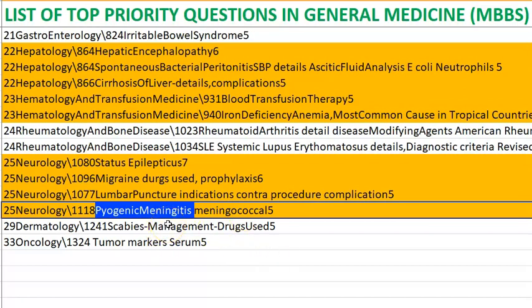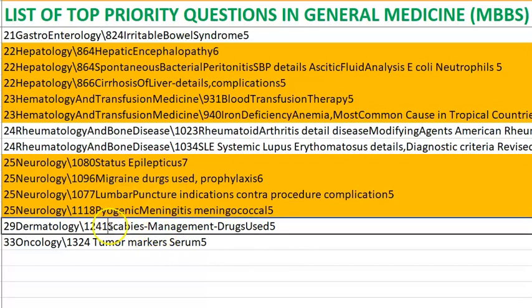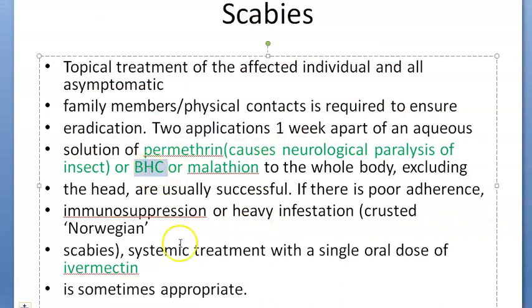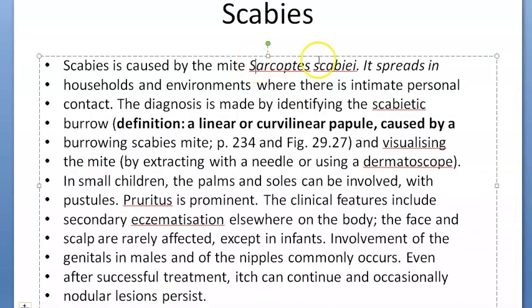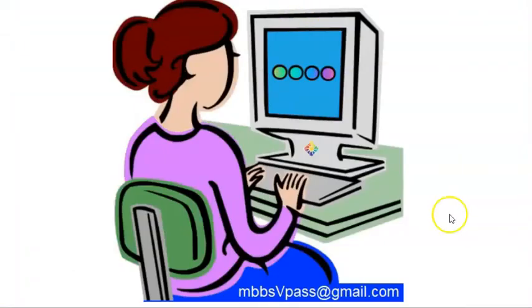Scabies treatment: permethrin is the primary treatment. Other treatments include malathion, BHC (lindane), and ivermectin. Scabies is an ectoparasitic infection caused by the mite Sarcoptes scabiei.